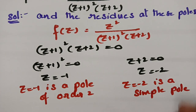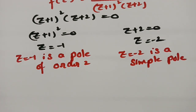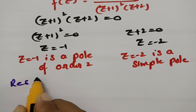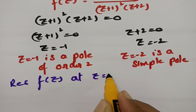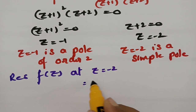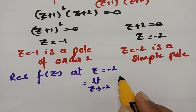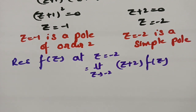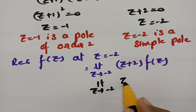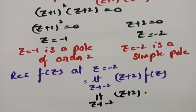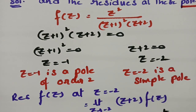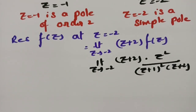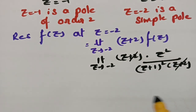After getting the poles we have to find the residues at these poles. To find the residue of the simple pole, the residue of f(z) at z = -2 is: limit as z tends to -2 of (z+2)·f(z). Substituting f(z) = z² / [(z+1)²(z+2)] and canceling (z+2), then substituting z = -2.